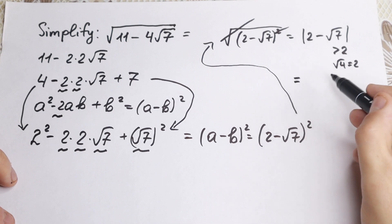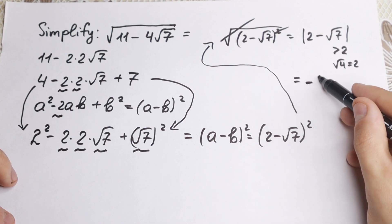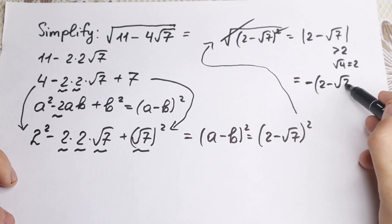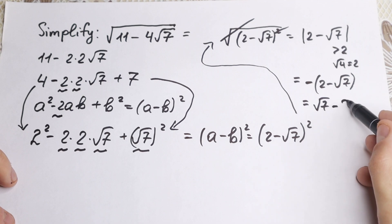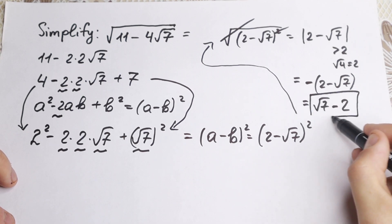So we need to put a negative sign in front of these parentheses: negative (2 minus square root of 7). And if we open our parentheses, we will have our final answer: square root of 7 minus 2. This is our final answer.